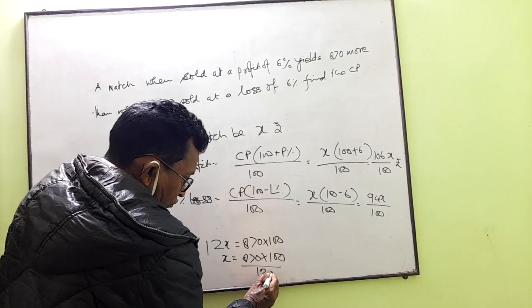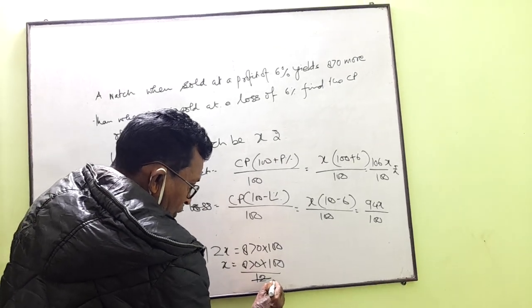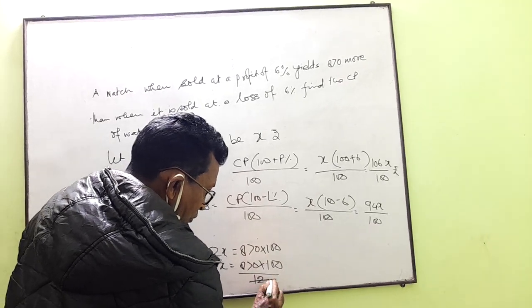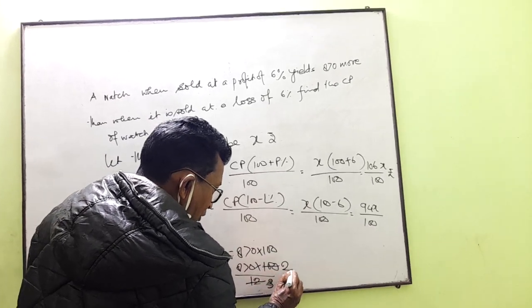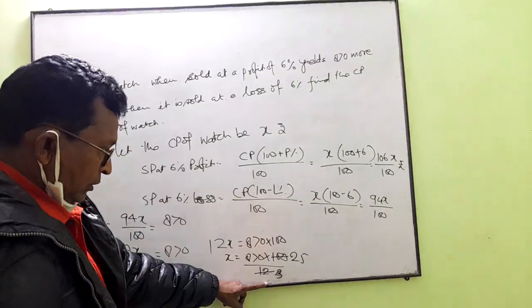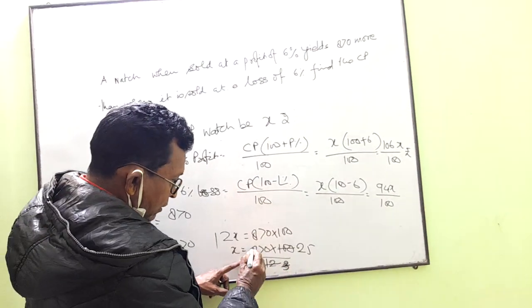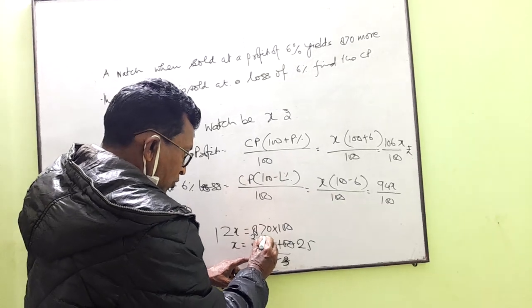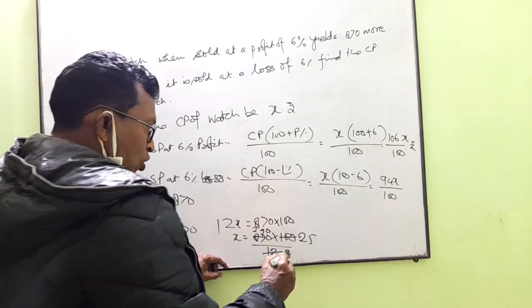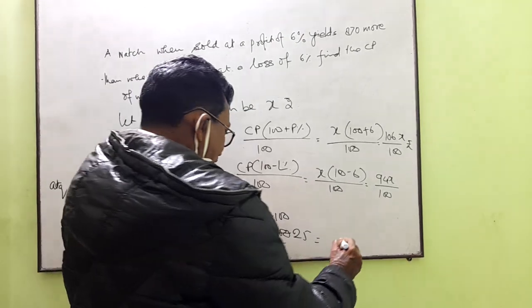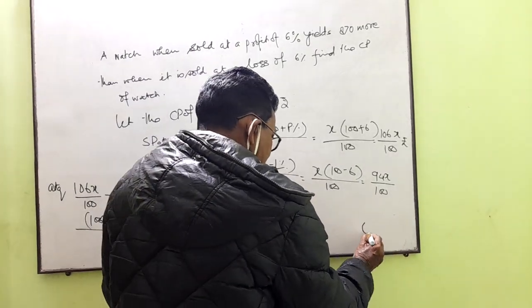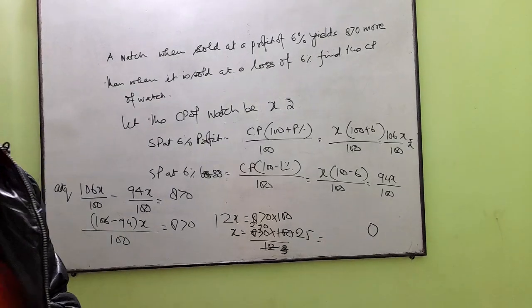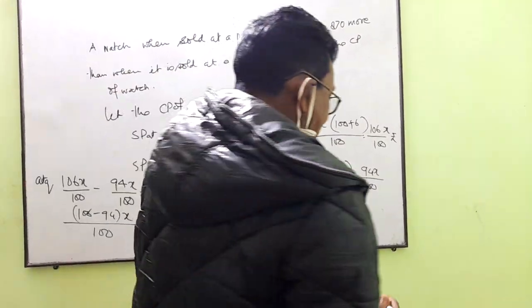x is equal to... let me calculate: 870 into 100 divided by 12. That's 87,000 divided by 12. Let me work this out: 12 into 87... 6, 7, 8... three nines are 27, and zero two is 29. Twenty-five, five. So twenty-five zero zero. Twenty-five into nine is... one twenty-five.